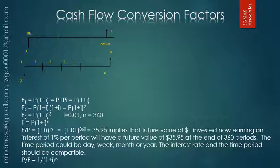After n time periods, the future value of a single sum P earning interest rate i per period is given by P times (1 + i) raised to the power n. If I put in a one percent interest rate, i becomes 0.01, and for 360 time periods n is 360, so you get the factor F/P as 35.95. This implies that the future value of one dollar invested now, earning one percent per period, will have a future value of almost 36 — a multiplying effect of 36 times at the end of 360 periods.